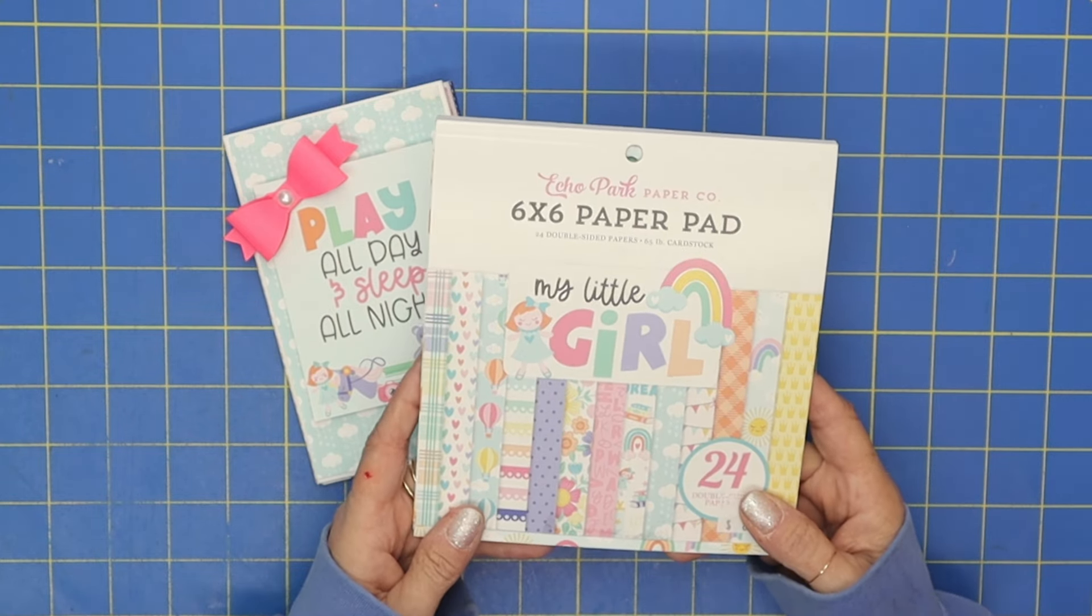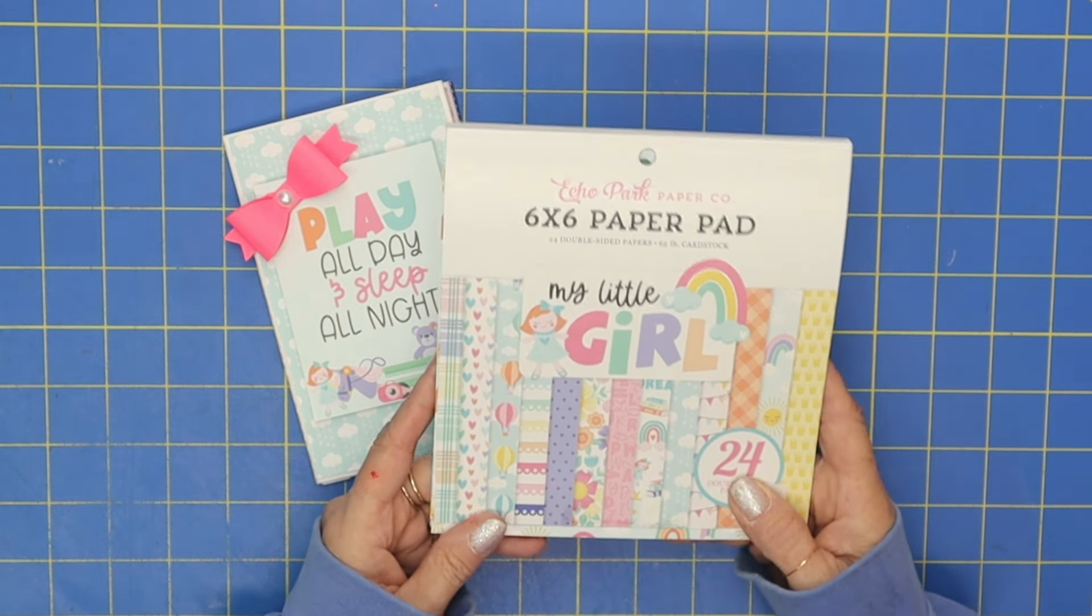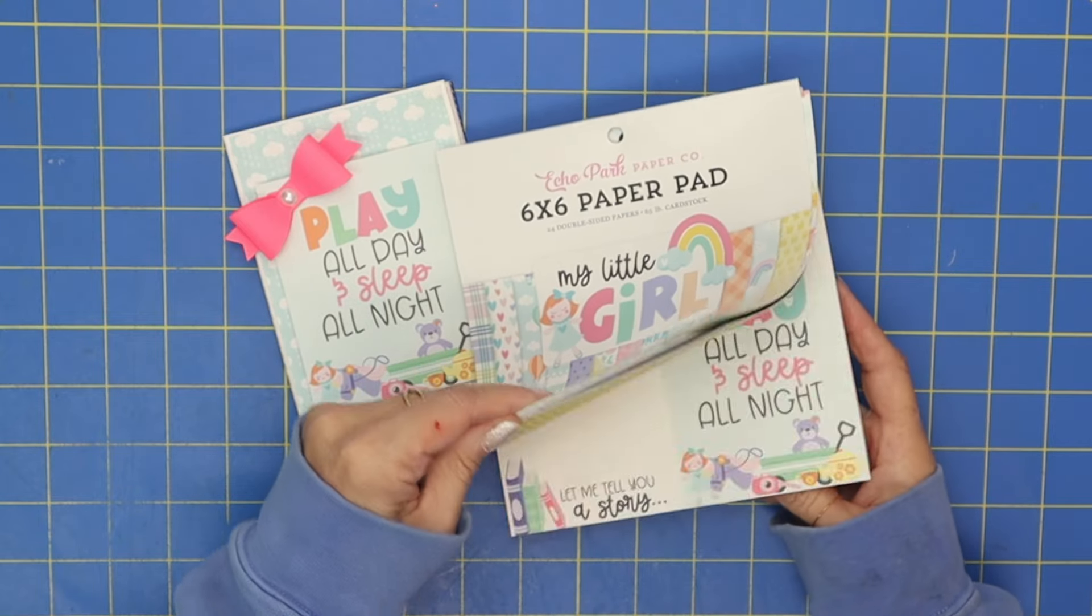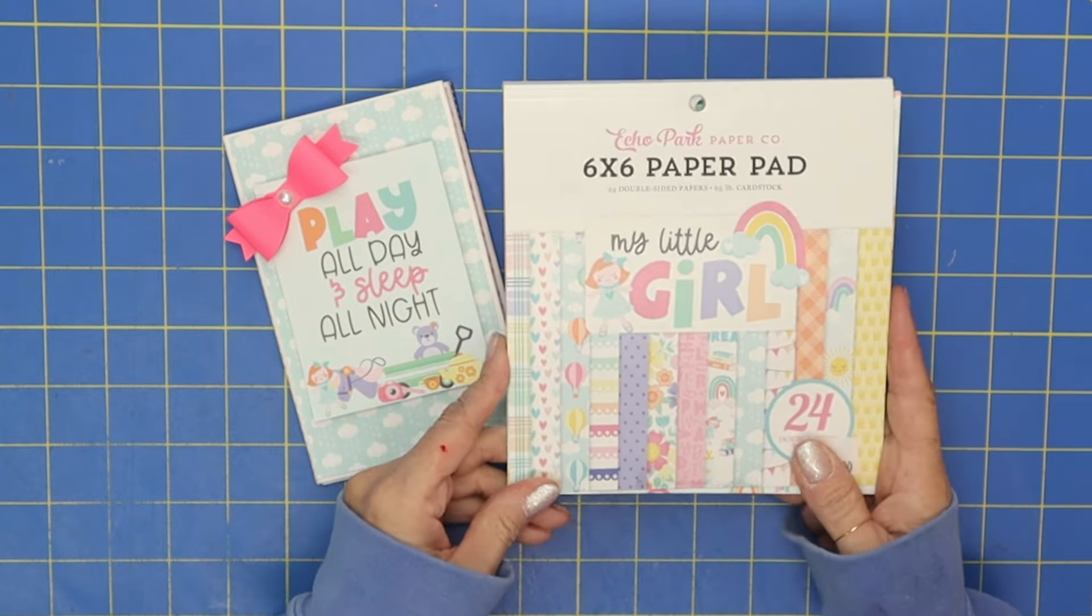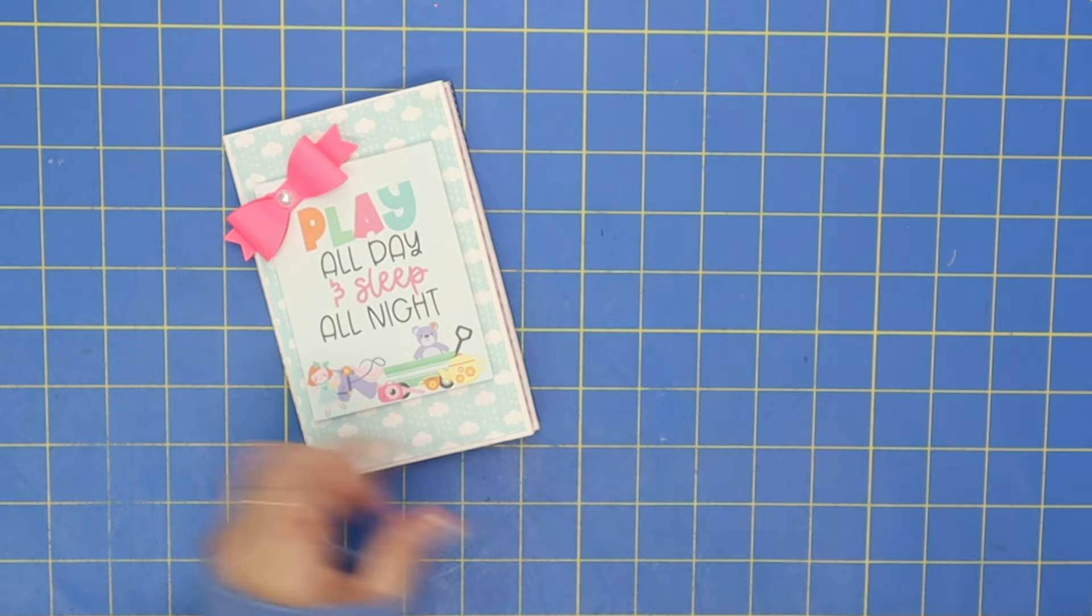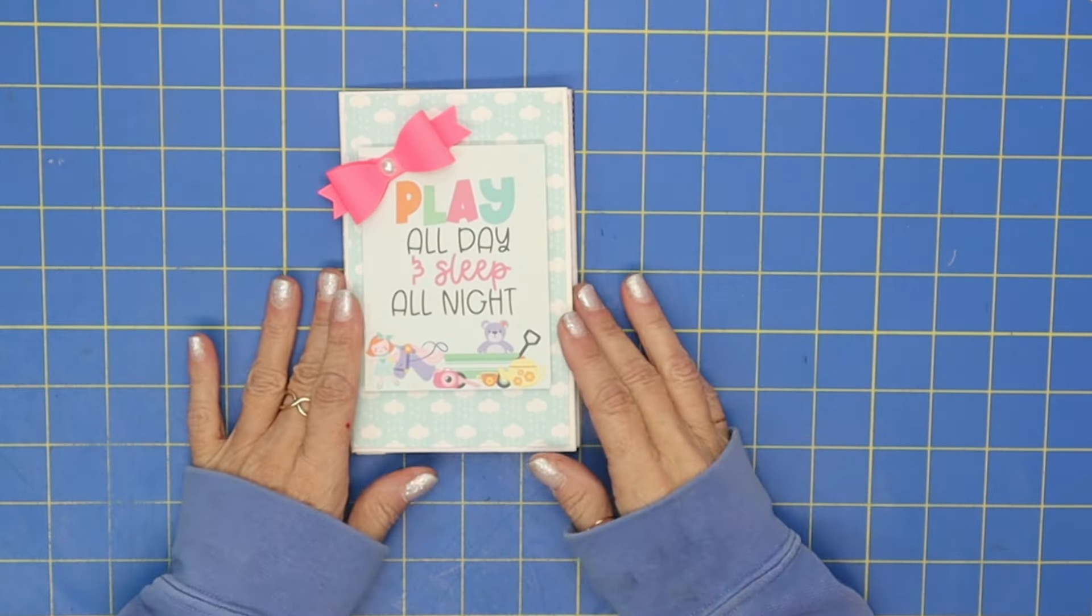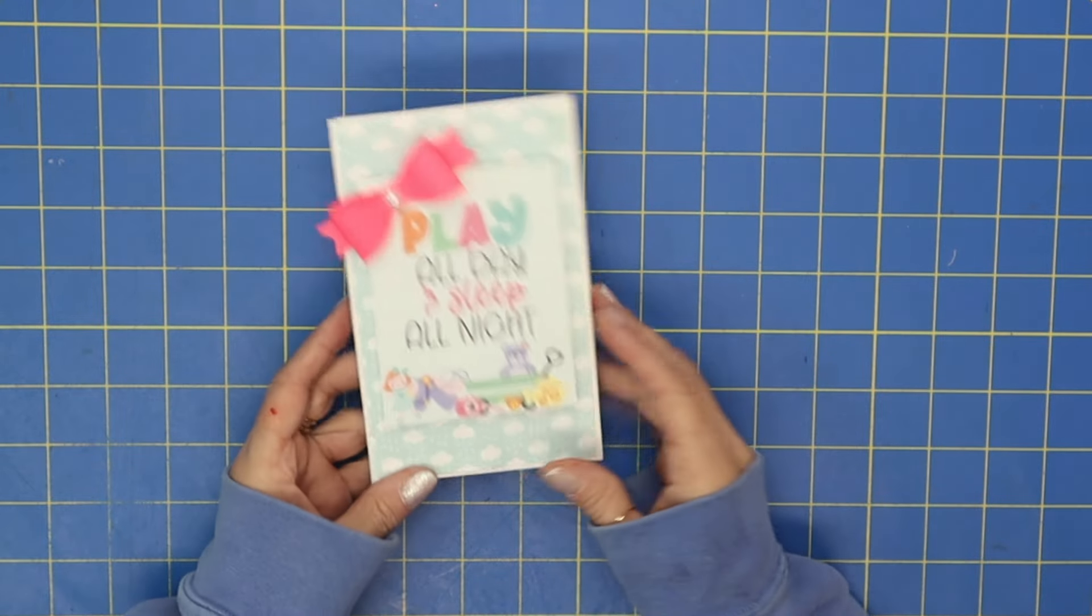Can I just tell you I fell in love with this. I was so excited, I knew exactly that I was going to make this mini album with this paper pack. Echo Park My Little Girl has been so much fun to play with. So let's go ahead and I'll show you the mini album and then we will start making it step by step.